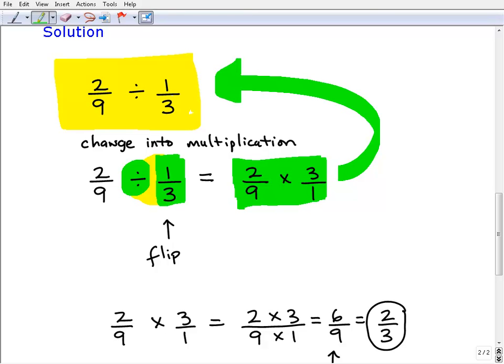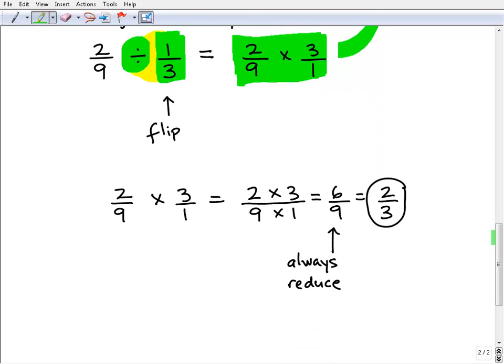When you're multiplying fractions, it's really easy to do. As you can see here, all we do is multiply the numerators. In this case, it's 2 times 3, which is 6.